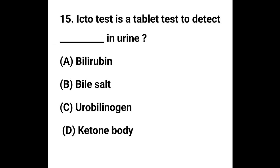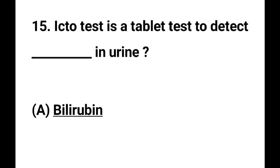Question number 15. Ictotest is a tablet test used to detect which substance in urine? Option A - Bilirubin, Option B - Bile salt, Option C - Urobilinogen, Option D - Ketone body. The correct answer is Option A, Bilirubin. Bilirubin is detected by Ictotest.